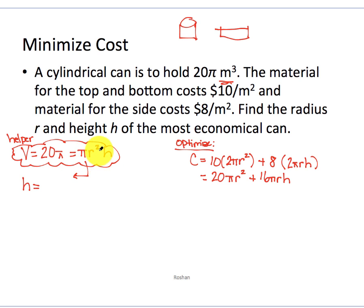So I divide both sides by πr². So I have 20π over πr². In other words, 20 over r². That's my h. So I'm going to use that to help me get this all in terms of r.